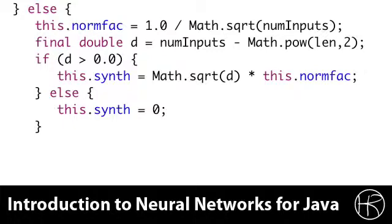If this value is greater than zero, then we calculate the synthetic input to be the square root times the normalization factor of d. If the value is less than or equal to zero, then the synthetic input is not going to be used. We simply set the synthetic input to zero, which causes it to evaluate to nothing, and it won't be added as part of the regular input.